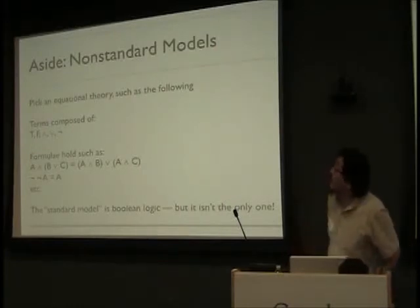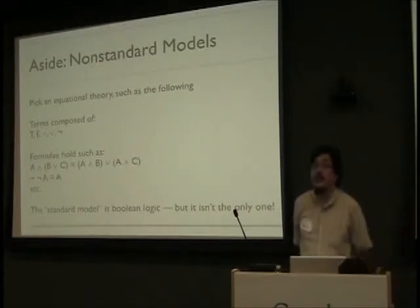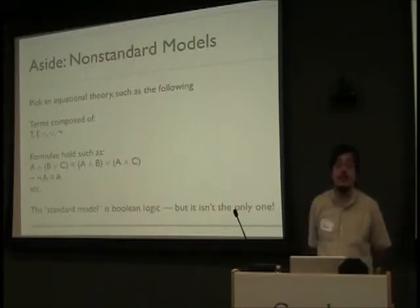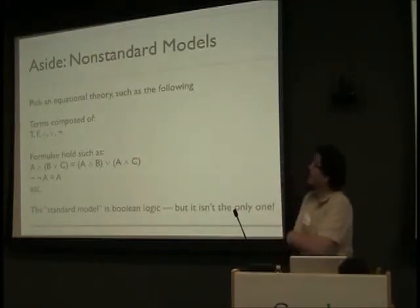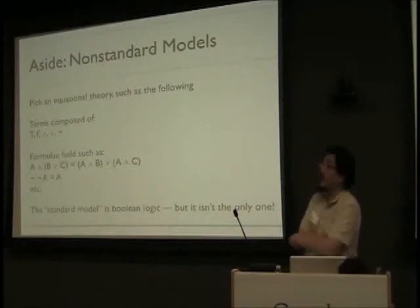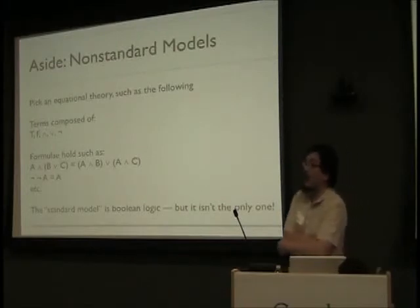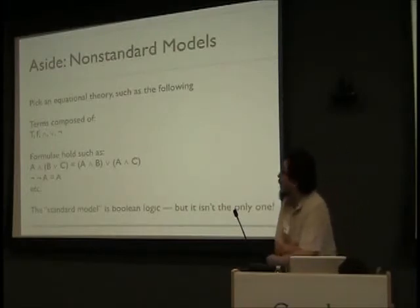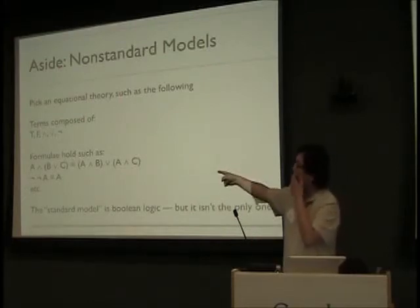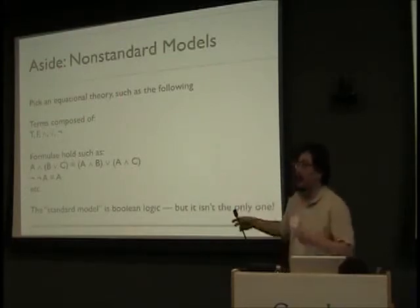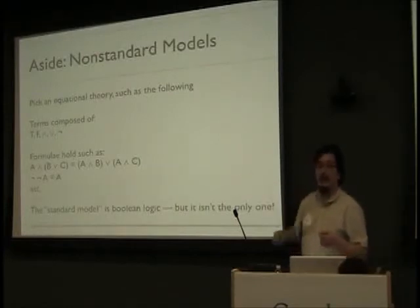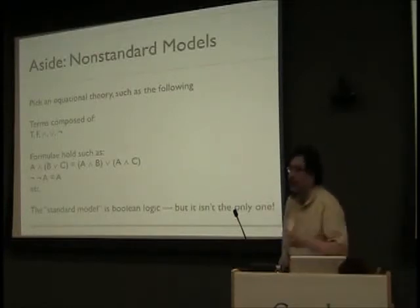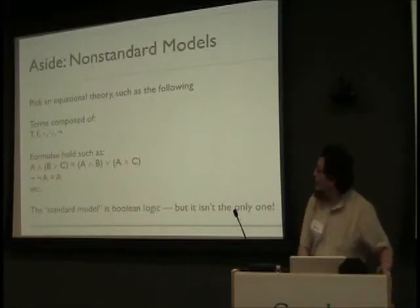Here's an aside on non-standard models. Pick an equational theory such as the following: terms composed of some symbols — true, false, and, or, not — given the usual arities. And pick just a few formulas. I've only picked a couple, but we can add a few more: like not-not A equals A, and A distributes over or. I've only checked those few. So here are some formulas that hold in this theory. Obviously, the standard or intended model: T stands for true, F stands for false, and the binary operations and and or.